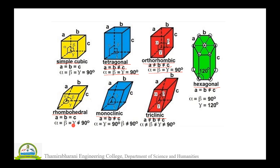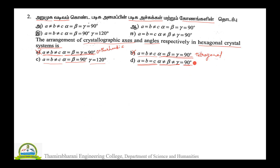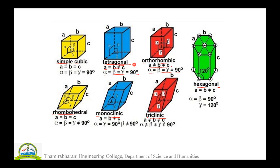Option C: a = b ≠ c, α = β = 90°, γ = 120°. Here, a and b are equal but c is different — the edge lengths a and b are the same, c is different. Alpha and beta are 90°, and gamma is equal to 120°. This is the hexagonal crystal system. Option C is the correct answer.